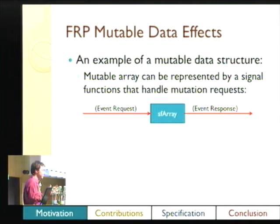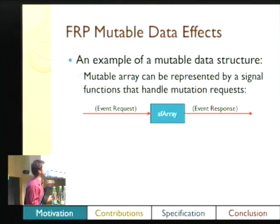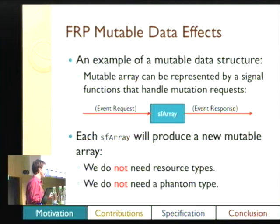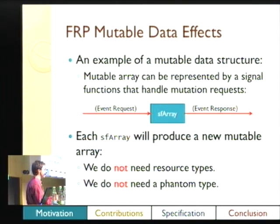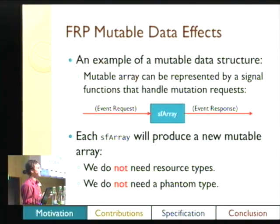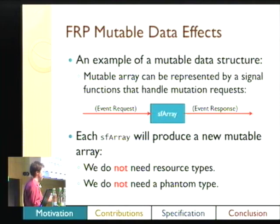For mutable data, it's a little different — we'll model it more like the ST monad. You can have a function `sfr`: the input stream would be requests like 'do this update' or 'read from this cell', and the output responses might be out-of-bounds errors or confirmation values. Unlike the keyboard, which is unique, you can put as many SF arrays in your diagram as you want, and each one is unique — each input and output stream is just for that array. So you don't need resource types; it just works.